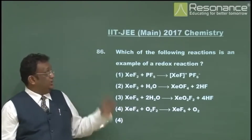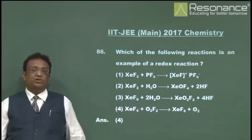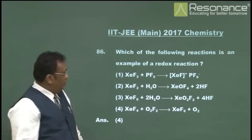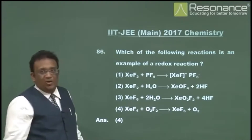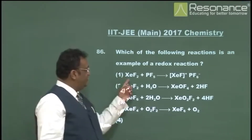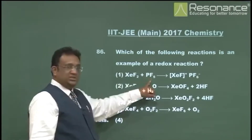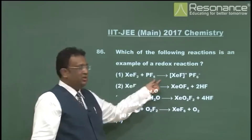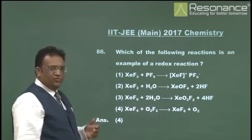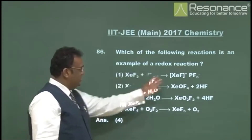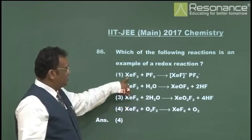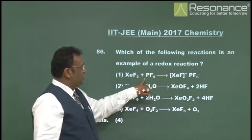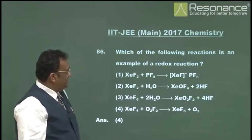Question 86 is about identifying redox reactions. In option 1, there is dissociation of F⁻ — a Lewis acid-base reaction where F⁻ breaks away and attaches to PtF₅. There is no change in oxidation number: xenon stays +2, fluorine stays −1, and phosphorus stays +5. This is not a redox reaction.